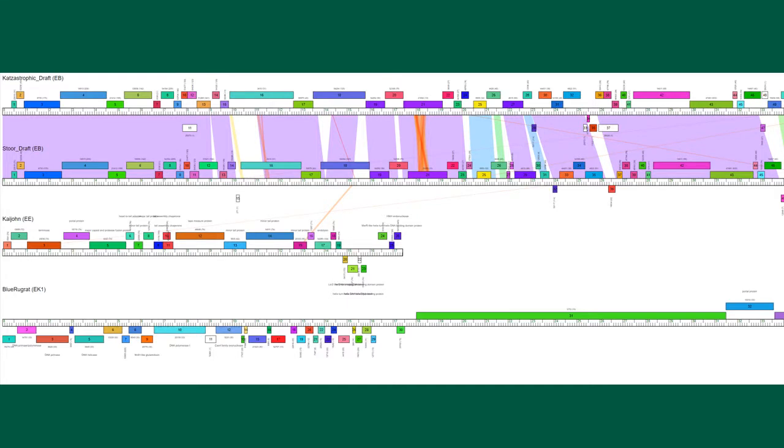We use a variety of bioinformatic tools and programs to determine the function of phage genes. This is an example of a Phamerator map, which is derived from the bioinformatic tool Phamerator. The colored boxes above and below the rulers are the phage's genes, and then the colored areas between two rulers indicate areas of homology, or areas where the DNA sequences of two genomes are similar to each other.